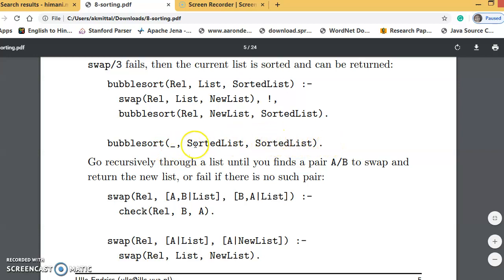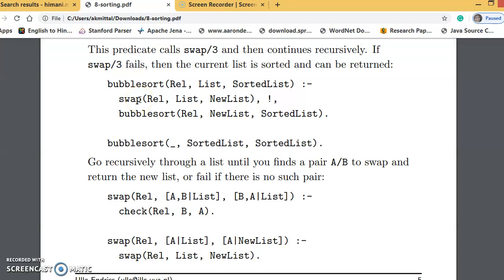If the list is not already sorted, then whatever relation is given, the list and the new list are given to the swap. What will swap do? Swap will take the first two elements of the list. If they are in their proper order, then swap will call itself recursively for the next pair. If they are not in proper sorted order, then swap will reorder them. For this, two definitions are given for swap.